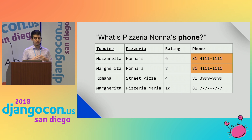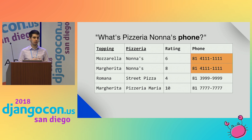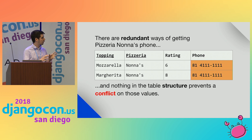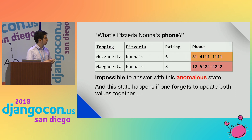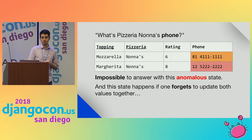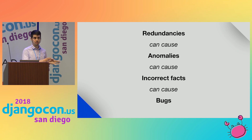If we ask the question — the fact — what's the pizzeria known as phone? We have two answers for this question in this table, because the phone of the pizzeria appears twice since that pizzeria has two toppings evaluated on the rating table. That means there are redundant ways of getting pizzeria known as phone, and nothing in the table structure prevents a conflict on those values. It's impossible to answer with this anomalous table if one forgets to update both values together.